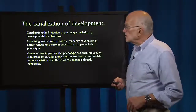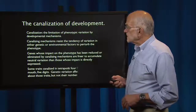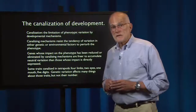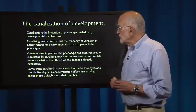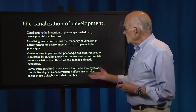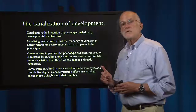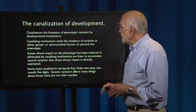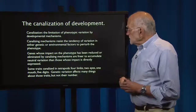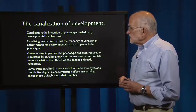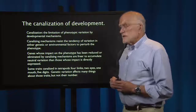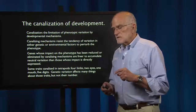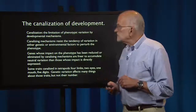If development sits between the genes and the phenotype and buffers the impact of genetic variation on phenotypic variation, the genotype is freer to vary and can accumulate more mutations. Traits that are canalized in tetrapods include four limbs, two eyes, one mouth, and five digits. Genetic variation affects many things about these traits, but it does not affect their number — their number is canalized.